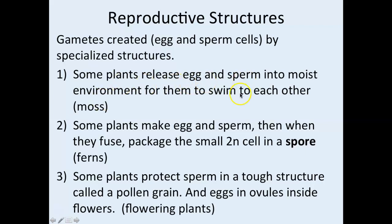Some plants make egg and sperm that fuse to form a spore, which is the entity that carries this 2n cell for dispersal. Some plants protect their egg and sperm through flower structures or pollen — these are flowering plants. The details of flowers, seeds, and fruit will be covered when we discuss flowering plants, otherwise called angiosperms.